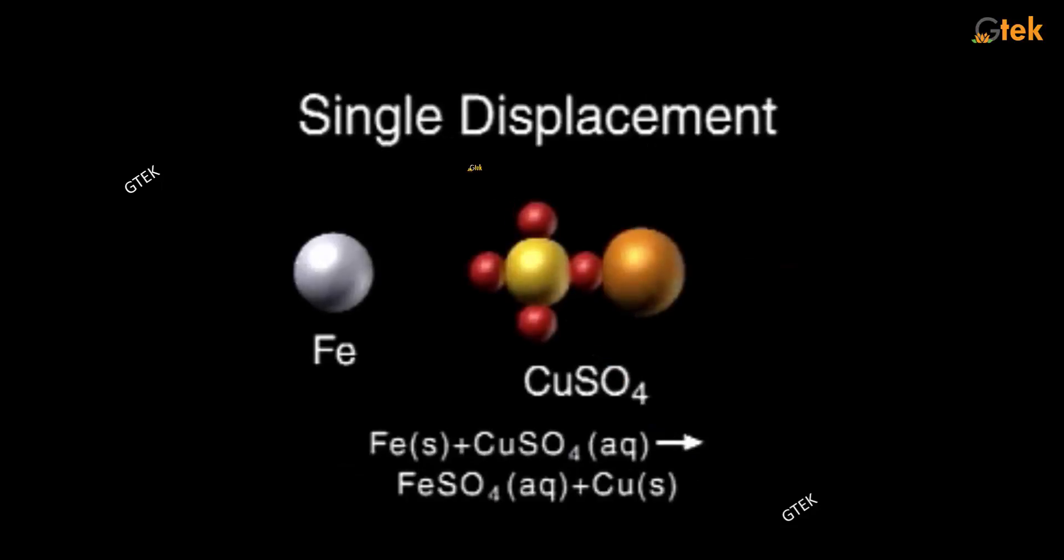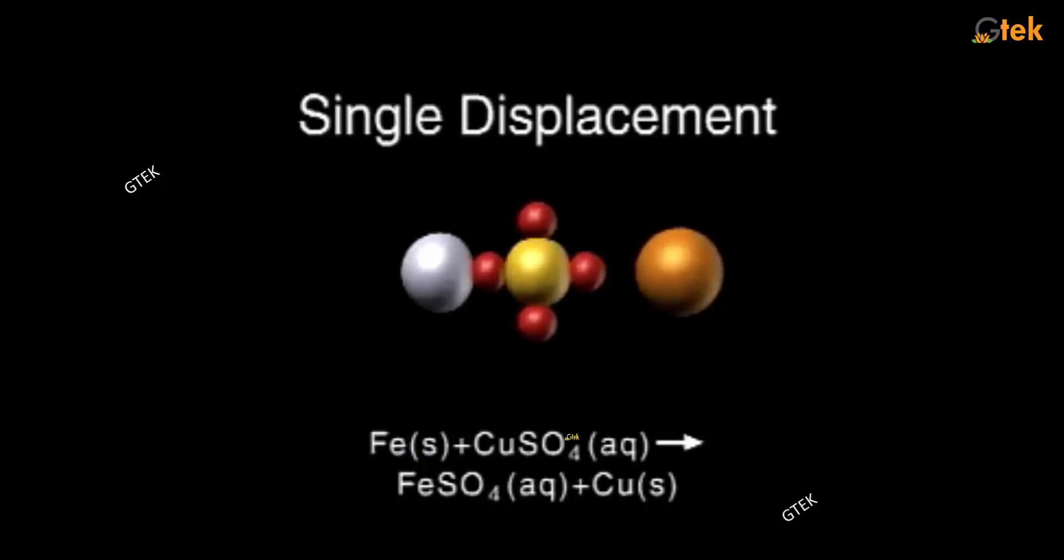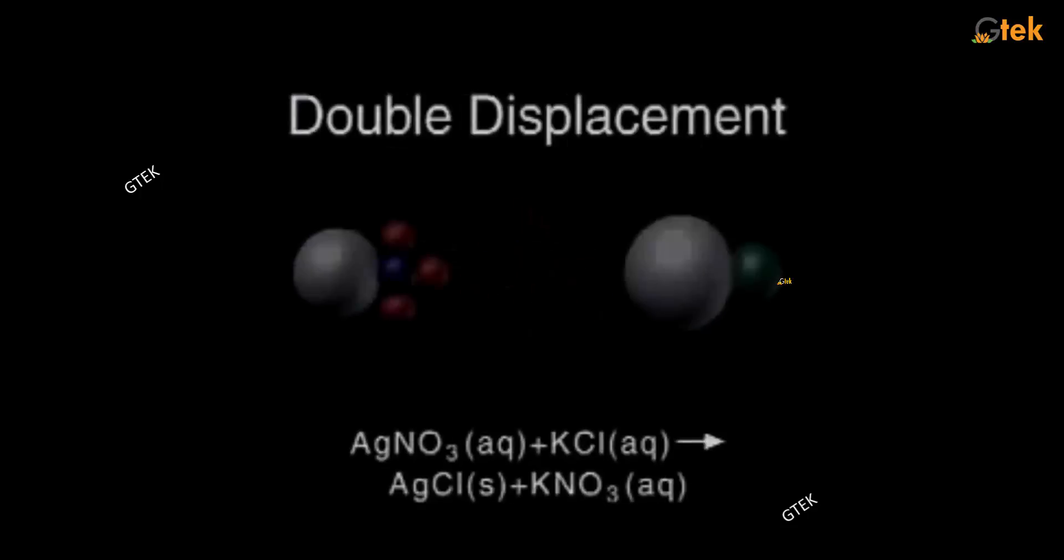Now, we will move on to the single displacement. Copper sulfate and iron is here. Iron plus copper sulfate will become iron sulfate. The ferrous and the copper sulfate become ferrous sulfate and copper. Single displacement is happening replaced by one thing.